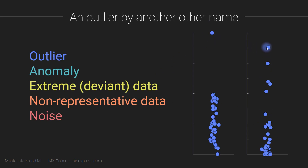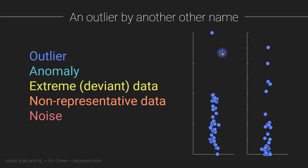Maybe you say these two are outliers. Well, how about these five? Maybe all five of these points are non-representative data. So you can start to see that sometimes it's easy, and sometimes it's not so easy to identify outlier points. Why are these outliers bad? They can skew the model in ways that are non-representative of the rest of the data sample.